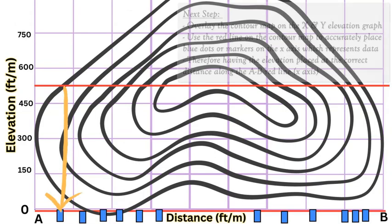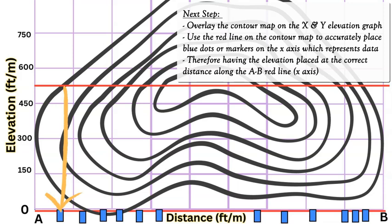I have my X and Y graph, now I just added the contour map, the aerial view, directly onto the graph. This way I can directly see and transfer the blue points from the red line, shown by this orange arrow for the left one. The first one is go directly from the red line directly down onto the X axis, which is the red line as well, going from A to B.